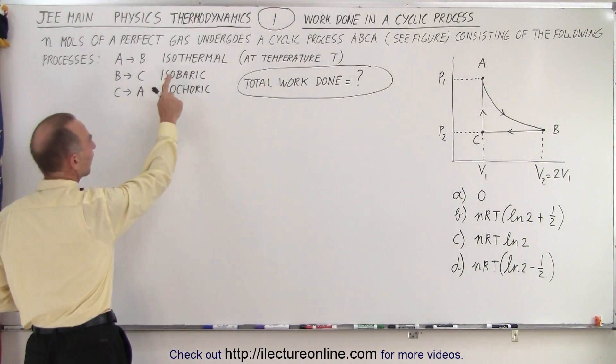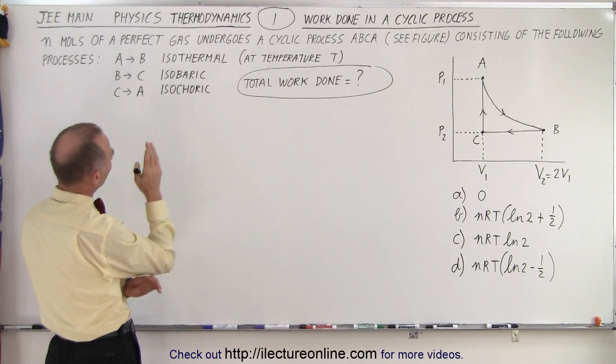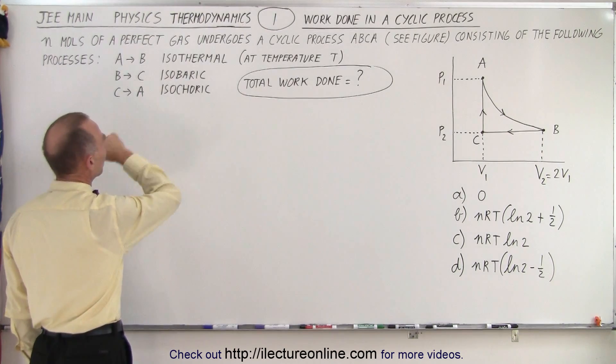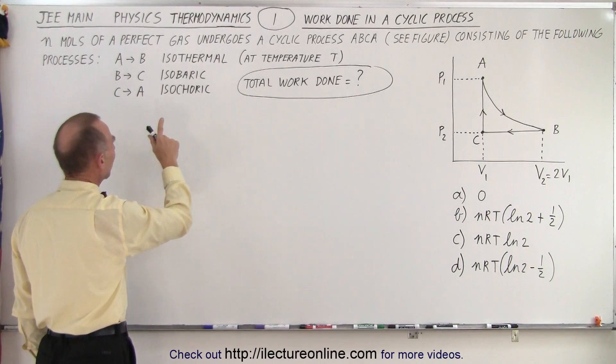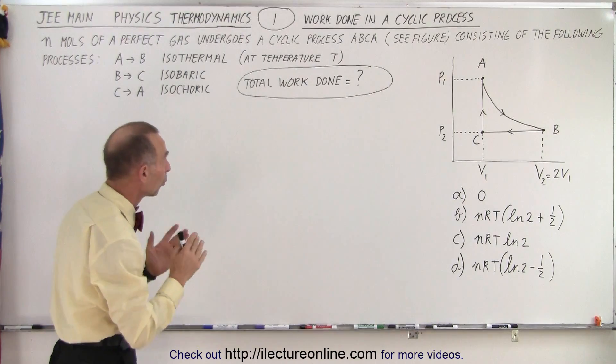So from A to B, we have an isothermal process. From B to C, we have an isobaric process. From C to A, we have an isochoric process, and they're wanting to know the total work done.